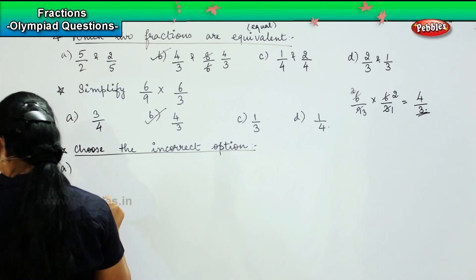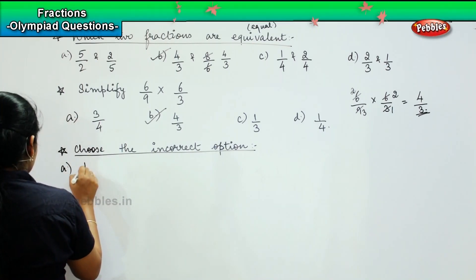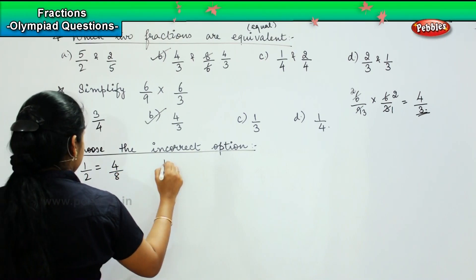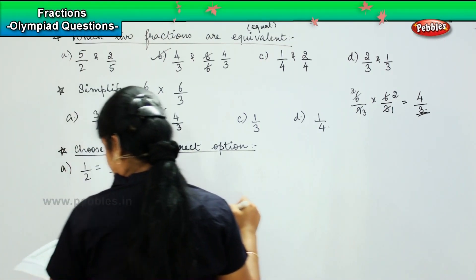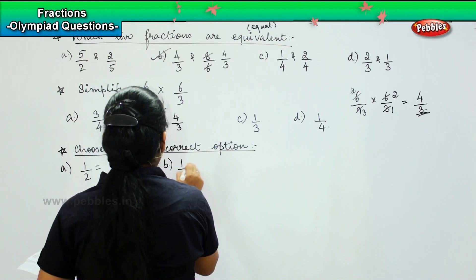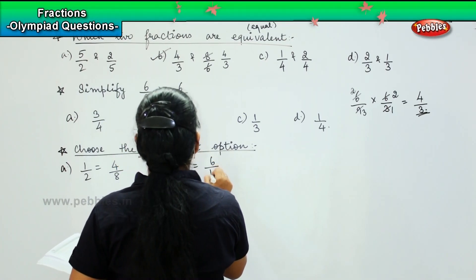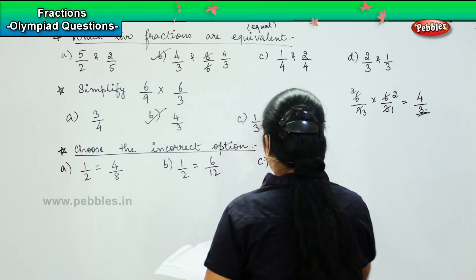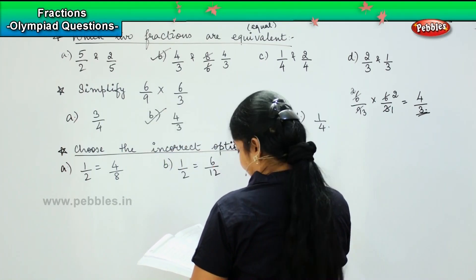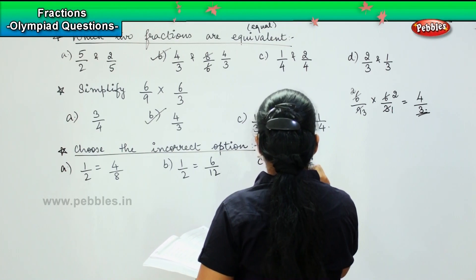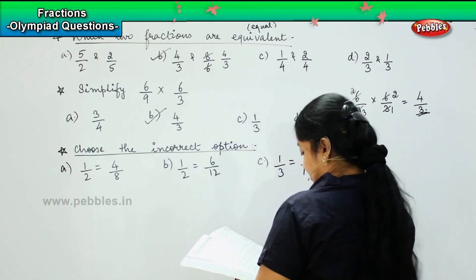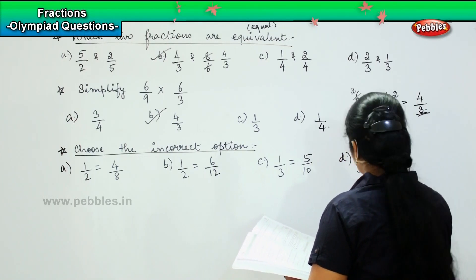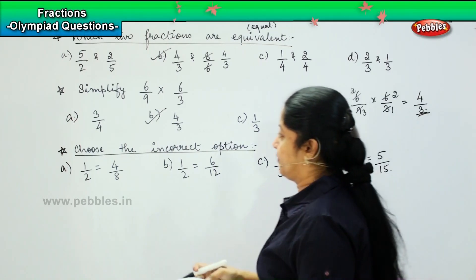Option A: 1/2 equals 4/8. Option B: 1/2 equals 6/12. Option C: 1/3 equals 5/10. And option D: 1/3 equals 5/15.